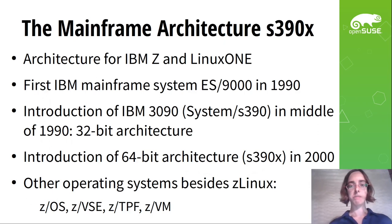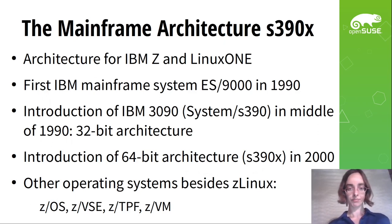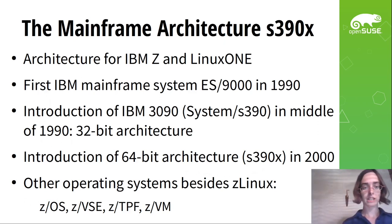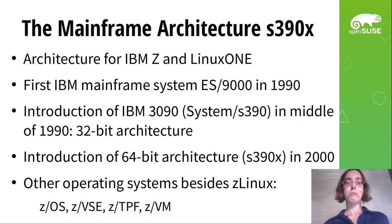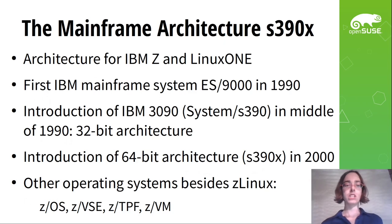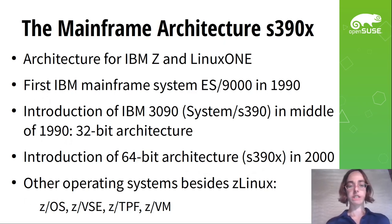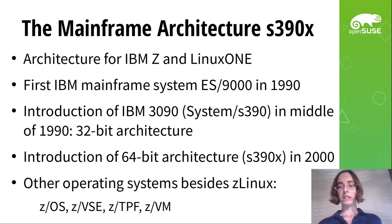S390X is the architecture for IBM Z and LinuxONE. The first IBM mainframe system was the ES9000, introduced in 1990. IBM then changed the name to System S390 in the mid-1990s — that was the IBM 3090 system. The architecture name reflects that history: it was originally specified for 32-bit, and when they introduced 64-bit, they added the X at the end. So the 64-bit architecture for the mainframe is the S390X, introduced in the 2000s.